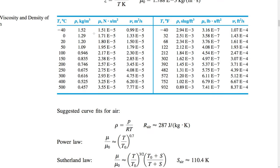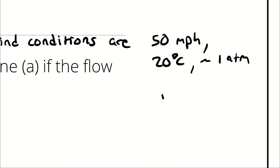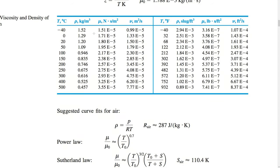And for air at 20 degrees Celsius I have a density of 1.2 kilograms per cubic meter and a kinematic viscosity of 1.5 times 10 to the negative fifth.